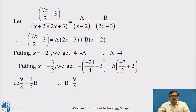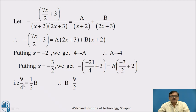Now we find the values of A and B by substituting suitable values of x. Putting x equal to minus 2 on both sides, the left-hand side gives 4 and we get minus A, therefore A equal to minus 4. Similarly, putting x equal to minus 3/2 on both sides, the left-hand side simplifies to 9/4, which equals 1/2 B, therefore B equal to 9/2.